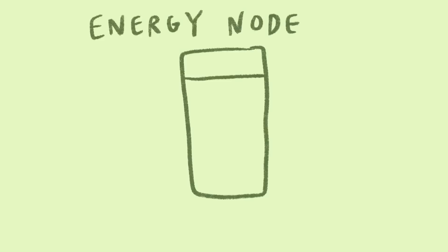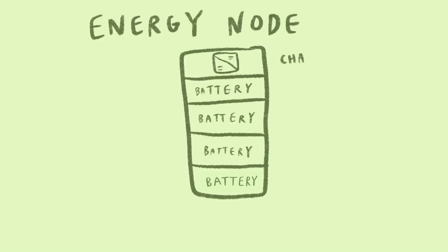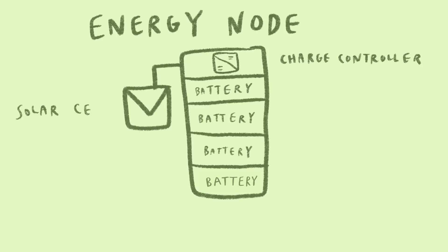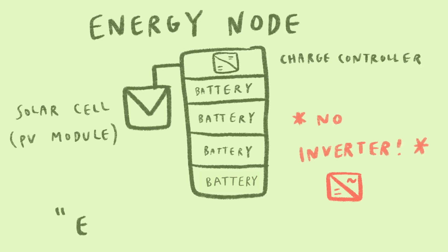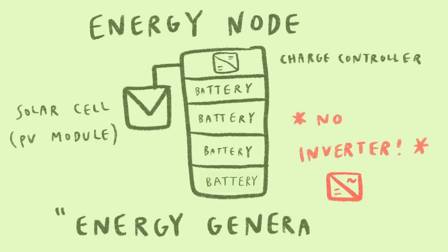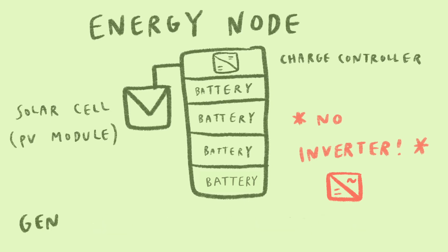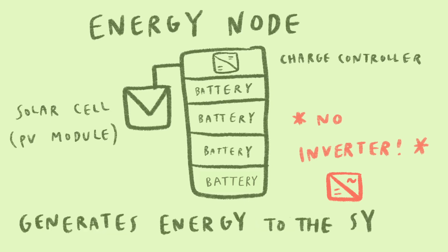Energy Node. It consists of charge controllers connected to solar cells and batteries. It does not contain an inverter, and it is also known as the energy generator, which generates energy to the system.